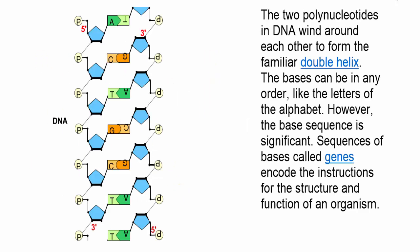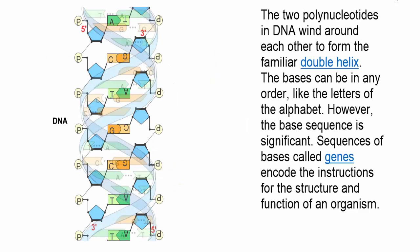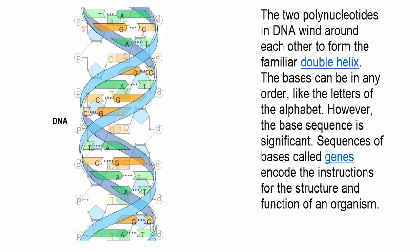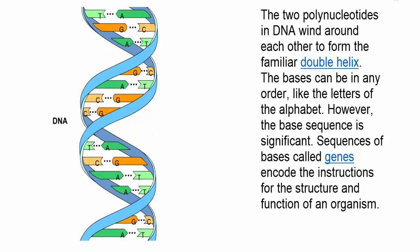The two polynucleotides in DNA wind around each other to form the familiar double helix. The bases can be in any order, like the letters of the alphabet. However, the base sequence is significant. Sequences of bases called genes encode the instructions for the structure and function of an organism.